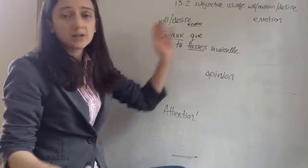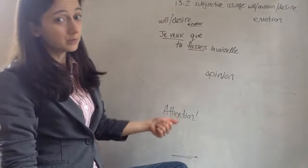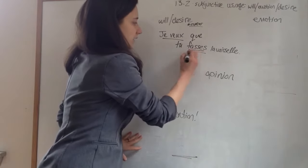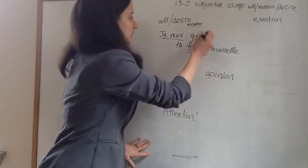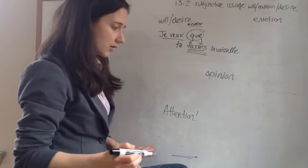So I wish that you do the dishes, I want you to do the dishes, I would like for you to do the dishes, all mean that this needs our subjunctive here. So we have que, separate subject, and subjunctive.